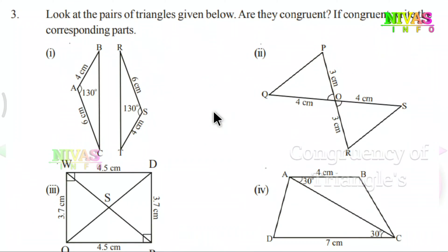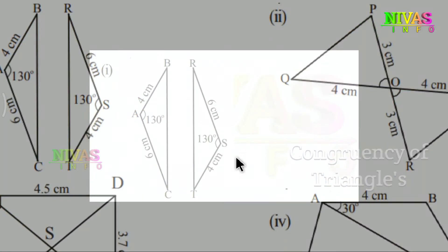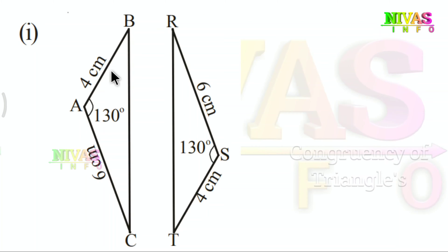Next question, third one: Look at the pairs of triangles given below. Are they congruent? If congruent, write the corresponding parts. If we have a pair of triangles and they are congruent, we have to explain the reasons. First problem: ABC is one triangle, RST is another triangle.